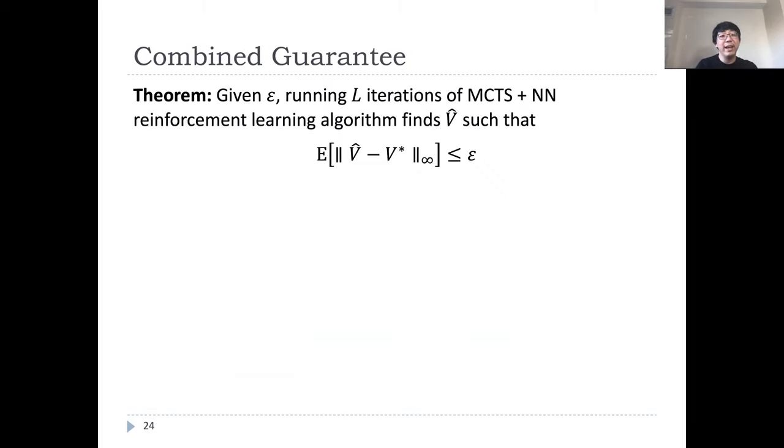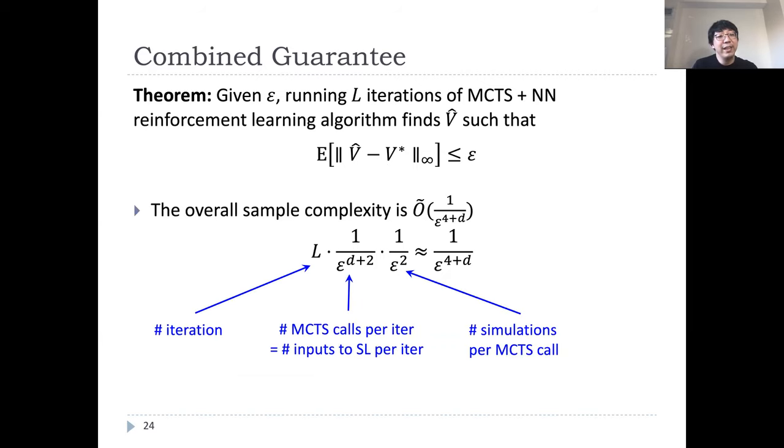Theoretically, we prove that after running L iterations of MCTS plus nearest neighbor algorithm with appropriately chosen parameters, we can obtain an estimate of the optimal value such that its L infinity error is within epsilon. The overall sample complexity to achieve this scales as 1 over epsilon to the 4 plus D. To get some intuition on this result, we have in total L iterations. Roughly speaking, each iteration requires 1 over epsilon to the D plus 2 MCTS calls to obtain a suitable training data. And for each query of MCTS oracle, we need to simulate, roughly speaking, 1 over epsilon squared times. This gives us the overall sample complexity. We remark that in this setting, there is a lower bound that scales as 1 over epsilon to the D plus 2.